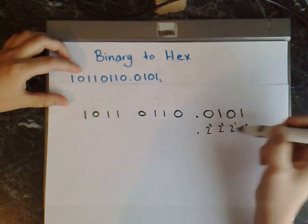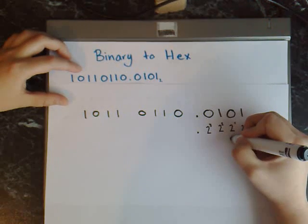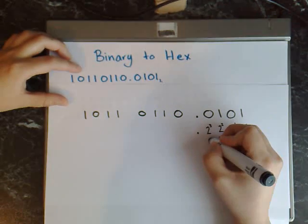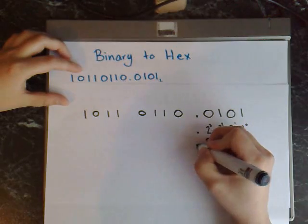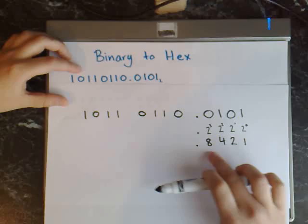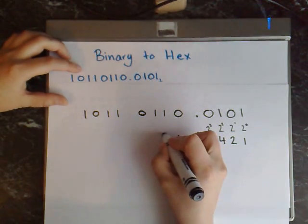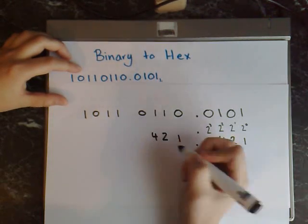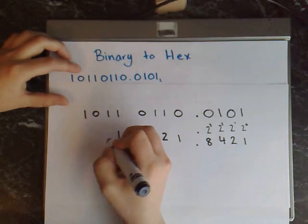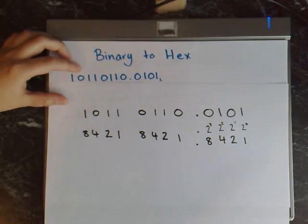Now I'll work out what each power is: 2 to the power of 0 equals 1, 2 to the power of 1 equals 2, 2 to the power of 2 equals 4, and 2 to the power of 3 equals 8. Now you need to do the same for each group, but instead of writing the powers out I'm just going to write out the bottom answer — so 1, 2, 4, 8 — and you repeat it for each group: 1, 2, 4, 8.